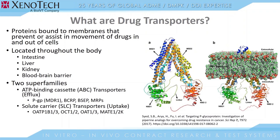There are two main superfamilies of drug transporters. The first are the ATP-binding cassette transporters, which are also called ABC transporters or efflux transporters. Efflux transporters use the energy from the hydrolysis of ATP to move compounds from the inside of the cell to outside. The main efflux transporters are PGP, BCRP, BSEP, and MRPs.